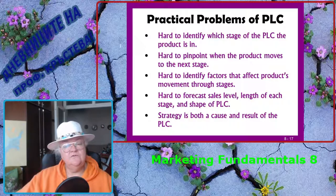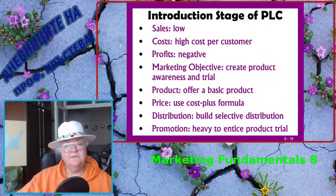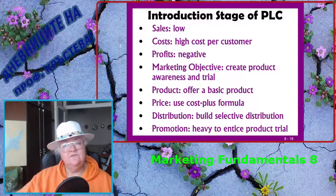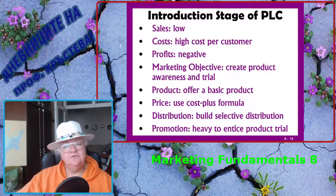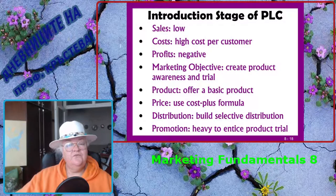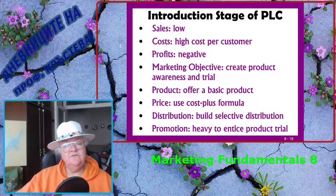Strategy is both a cause and result of the product life cycle. At the introduction stage, sales are low, costs are high per consumer, and profits are usually negative. The marketing objective is to create product awareness and trial. The product offer is a basic product. Price uses a cost-plus formula, and distribution builds selective distribution, with promotion designed to entice product trial.